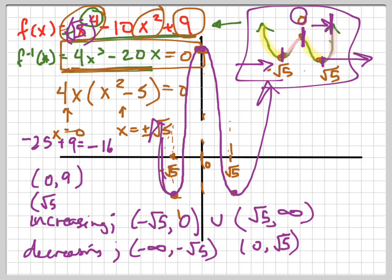So root 5, comma, negative 16, and negative root 5, comma, negative 16. That's going to be the same value because I... Those were... This is an even function, so it's symmetric.